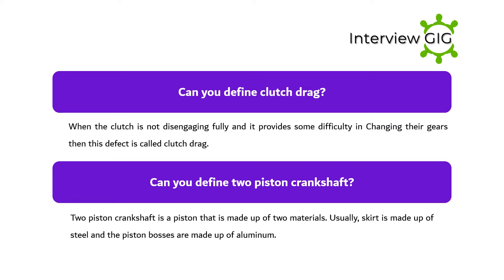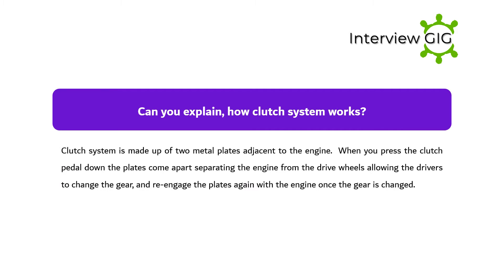Can you define a bi-metal piston? A bi-metal piston is a piston made up of two materials. Usually the skirt is made up of steel and the piston bosses are made up of aluminum.